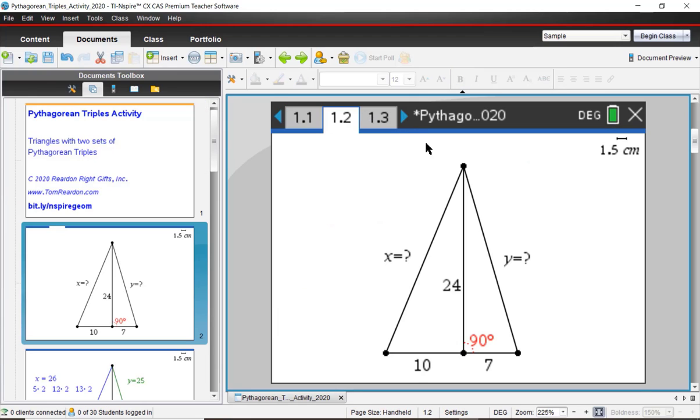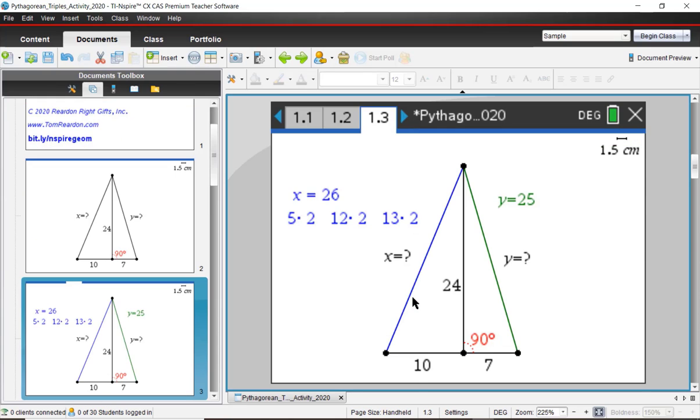So we'll advance to page 1.2. Here we have a triangle with an altitude drawn to this side right here, and we're giving three lengths and ask to find the other two. If you'd like to try this, go ahead and press pause. Otherwise, I'll continue. We have a 7, 24, 25 over here. This is a right triangle. That's one of the known triples. And then 10, 24, 26 because it's a double multiple of our good old buddy 5, 12, 13.